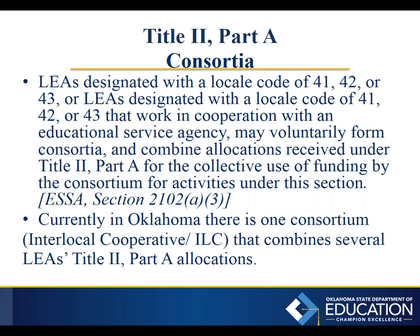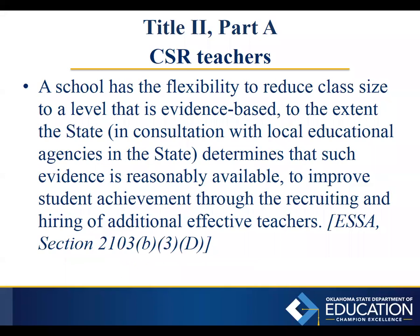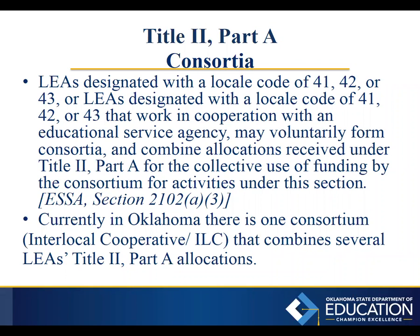Moving to Title II Part A, one flexibility is to form consortia. Section 2102 mentions that LEAs designated with a locale code of 41, 42, or 43 — or such LEAs working in cooperation with an educational service agency — may form a consortium on a voluntary basis and combine their allocations received under Title II Part A for the collective use of funding by the consortium. Currently in Oklahoma, there is one consortium, the Interlocal Cooperative, that combines several LEAs' Title II Part A allocations.